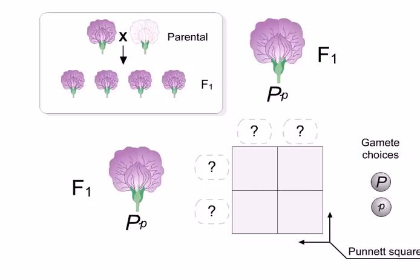From the choices given, select the correct gametes to place on the two sides of the Punnett square.